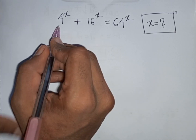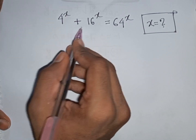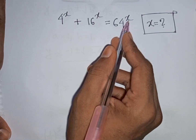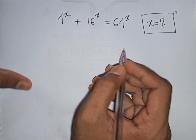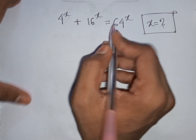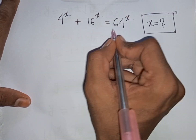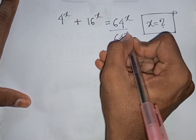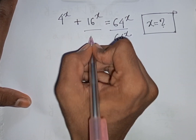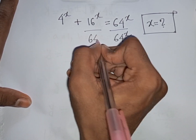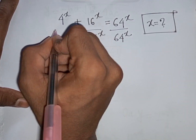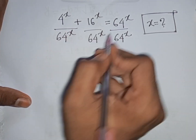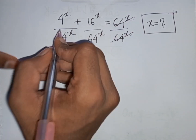How to solve 4^x + 16^x = 64^x. Find the value of x. First, we divide both sides by 64^x, so we divide each term by 64^x. The 64^x terms cancel on the right side.